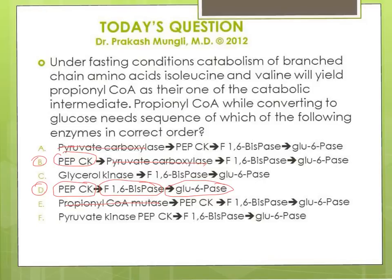So the correct sequence of enzymes to convert propionyl-CoA to glucose includes: propionyl-CoA carboxylase, methylmalonyl-CoA mutase, PEPCK, fructose-1,6-bisphosphatase, and glucose-6-phosphatase. Therefore, option D is the correct answer. If you had difficulty understanding this, I recommend watching my detailed 20-minute gluconeogenesis video — you'll gain a thorough understanding of the process and its regulation. Thanks for watching, take care and bye.